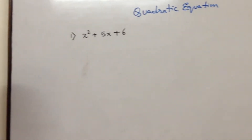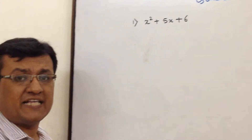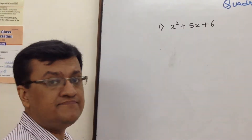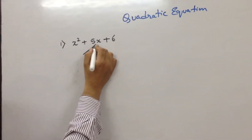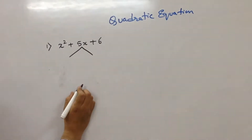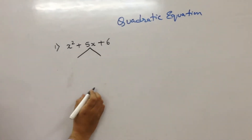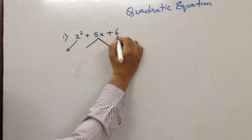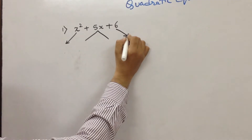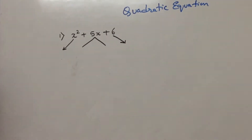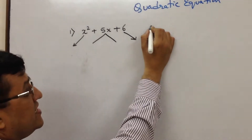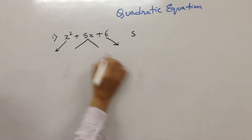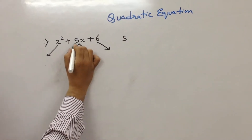Quadratic equation factorization is also termed as splitting the middle term. Splitting the middle term means we need to split this particular term. In the process of doing so, the first term and the last term remains the same. Now, over here,